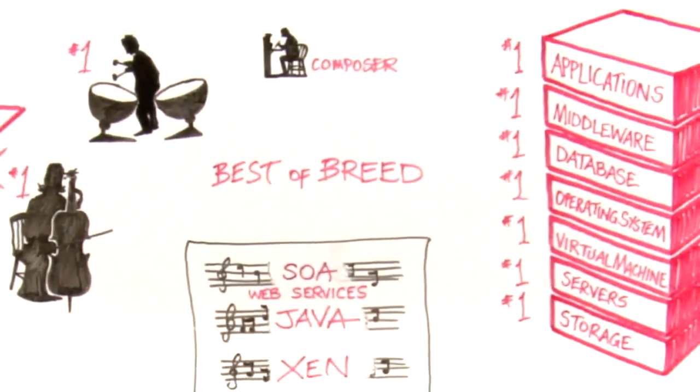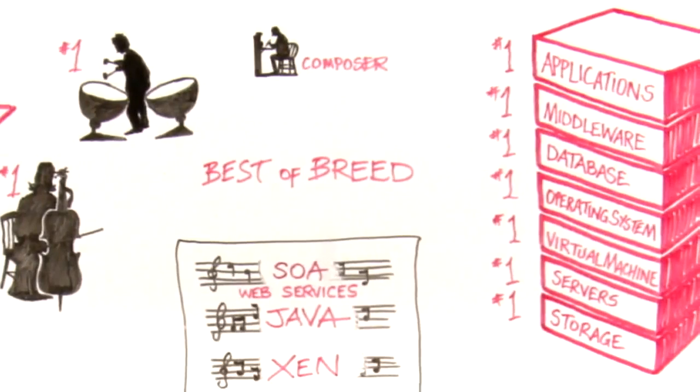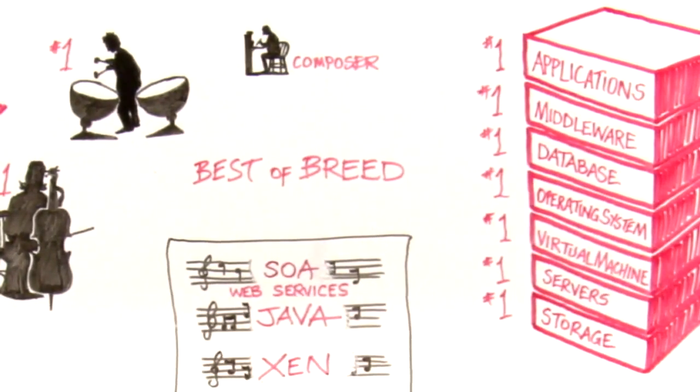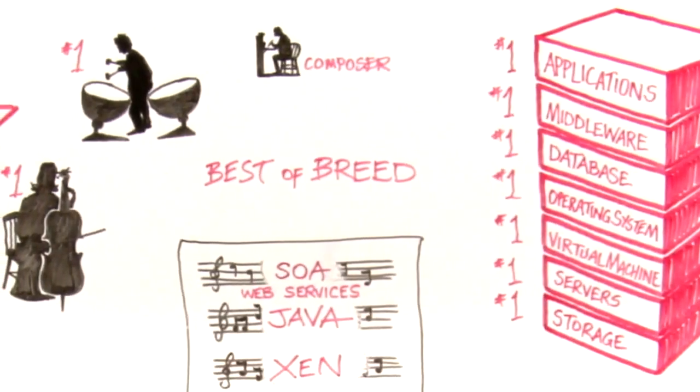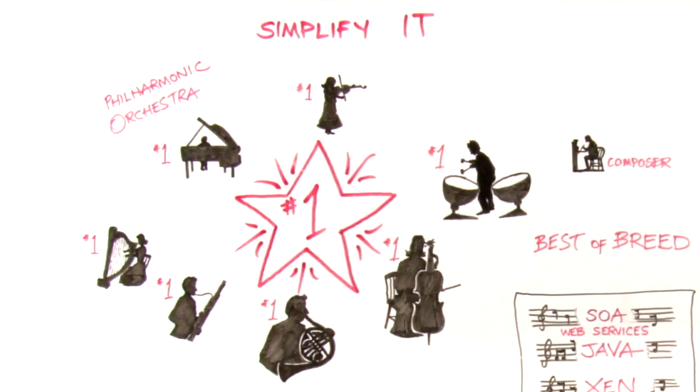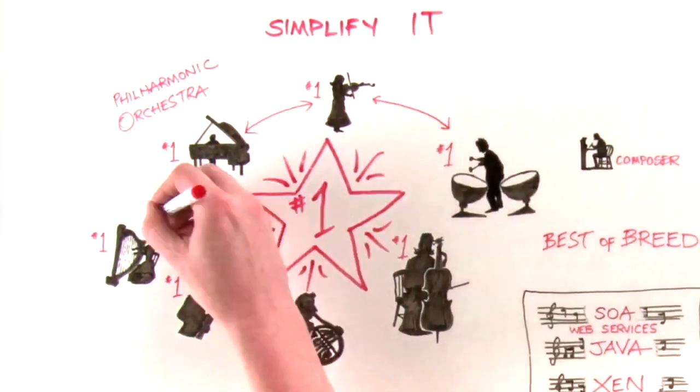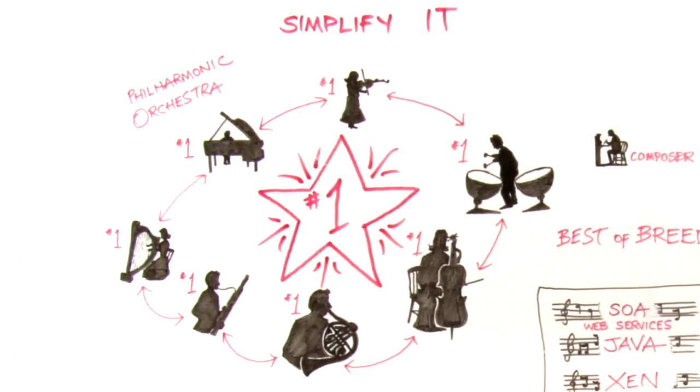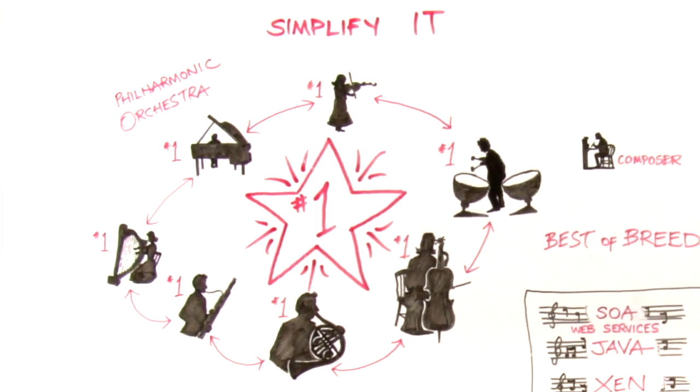When a composer writes music for an orchestra, they don't compose the music for each instrument of the orchestra in isolation and just hope that the string section works with the woodwind section and so on. A composer knows exactly what each section is doing, making the music from each instrument complement each other, timing it to bring in each instrument at the perfect moment to give the optimum sound.